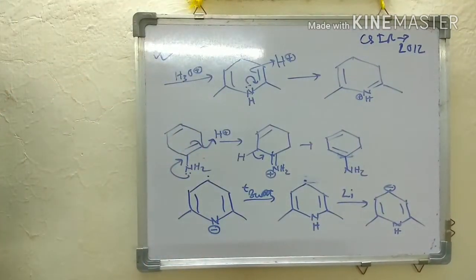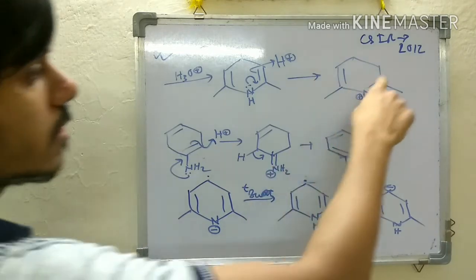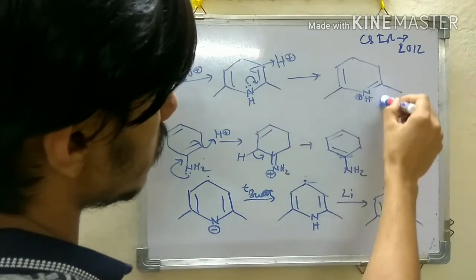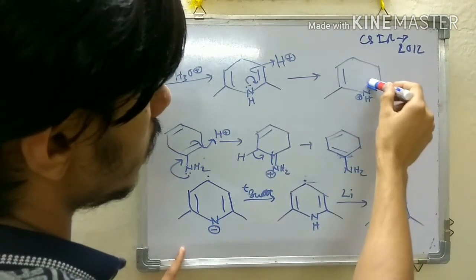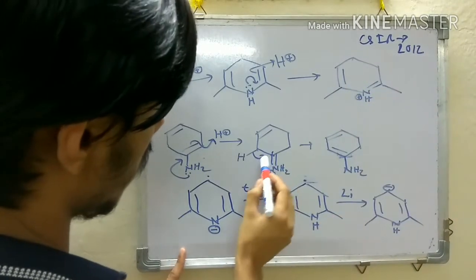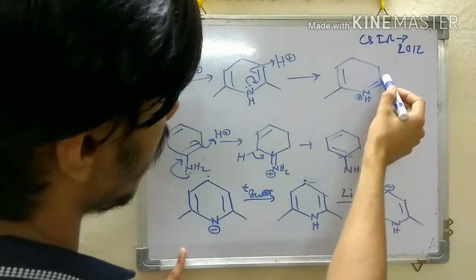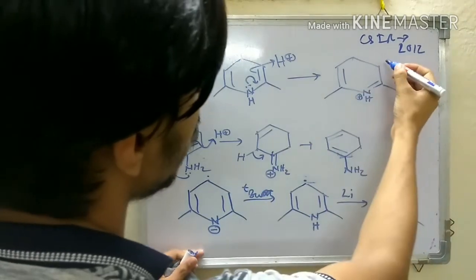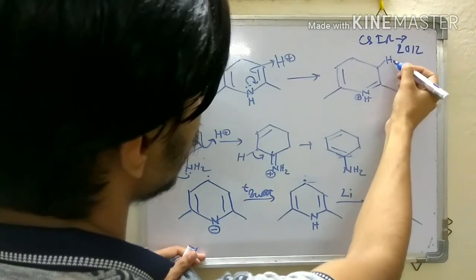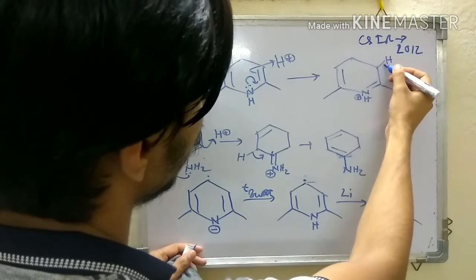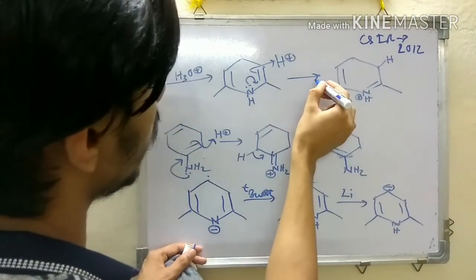But in this case, there's no such possibility because there are two positions - one here and one here. In this case, only one type of proton is there, and if it eliminates, you'll get back the same product.